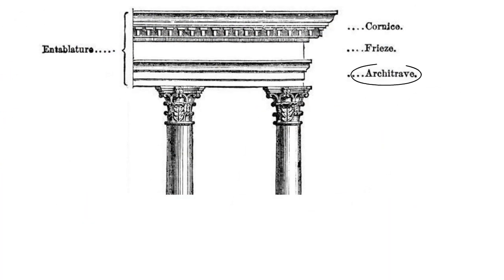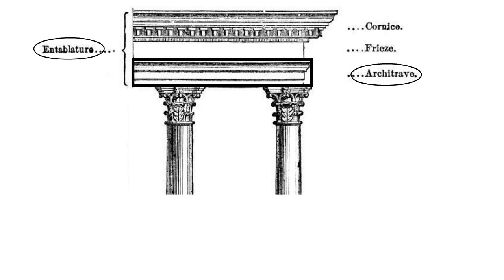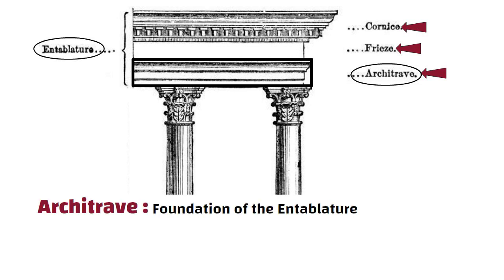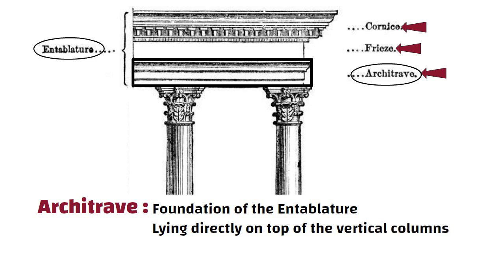In architecture, an architrave is the bottom part of a horizontal structure called an entablature. The entablature consists of three parts: the architrave, the frieze, and the cornice. The architrave is the foundation of the entablature, lying directly on top of the vertical columns in a building. Its purpose is to secure the stability of a structure.